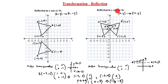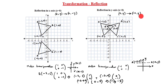Second type: reflection in the y-axis, x is equal to 0. In this drawing, this is the y-axis. The given image is x comma y, and the reflected image is minus x comma y. For example, a is given as minus 3 comma 5. Minus x means minus of minus 3 which is plus 3, y stays as 5. So a reflected is 3 comma 5. Similarly, c is minus 2 comma 1; reflected c dash is 2 comma 1.